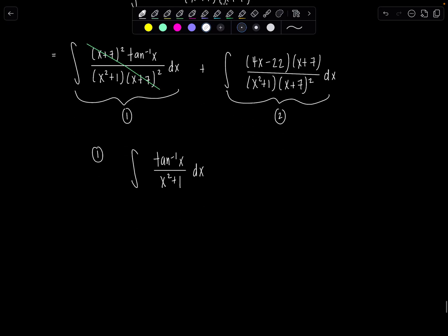Hopefully you recognize this is the perfect place to use u-substitution. So we're going to let u equal tan inverse of x, and then du, its derivative, would be 1 over x squared plus 1 dx, which is sitting right here waiting for us. So now we have integral u du. How sweetly that cleaned up.